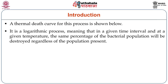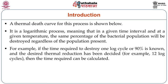Let us try to understand the logarithmic process. It means that in a given time interval and at a given temperature, the same percentage of bacterial population should be destroyed regardless of the population present in the food matrix. For example, if the time required to destroy one log cycle or 90% is known, then the desired thermal reduction has to be decided — for example, 12 log cycles for a particular amount of food — and the time required can be calculated.